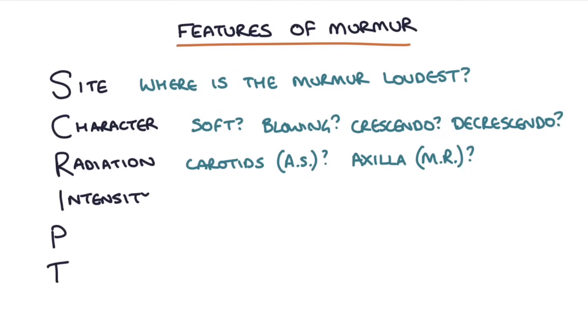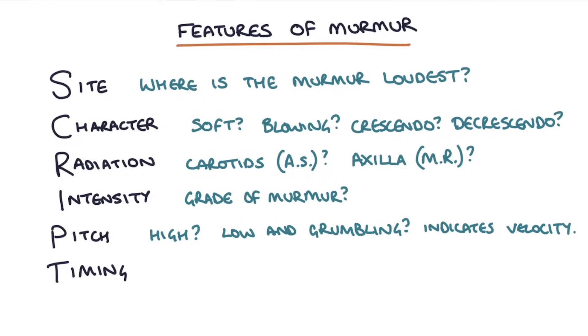I is for intensity, so what grade is the murmur? P is for pitch, is it high-pitched, or is it low and grumbling? Pitch basically indicates the velocity of the murmur. And then finally T is for timing, so is it systolic or diastolic? So I'll go through that mnemonic again. SCRIPT, meaning site, character, radiation, intensity, pitch, and timing.